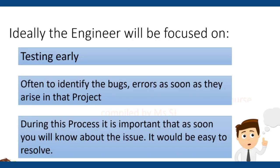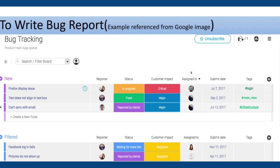Ideally the engineer will be focused on testing early and often to identify bugs and errors as soon as they arise in the project. During this process, it is important that as soon as you know about an issue it will be easier to recover. I also found an example from Google on how to write a bug report — I hope it will help give you an idea of how we can track bugs in different projects. As you can see, it gives you status, customer impact, as well as different other things related to bugs. You can also use different other software tools to find bugs in your project at any step.